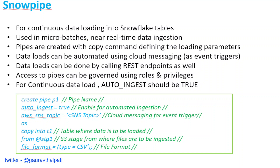The use case for Snowpipe is near real-time or micro-batch scenarios — any sensor data or continuously arriving file sources. To create a Snowpipe, you use the CREATE PIPE command. You set AUTO_INGEST = TRUE for automated ingestion, provide the SNS or SQS topic as the event trigger, and then write a normal COPY command specifying the external stage, the target table, and the file format. Once the pipe is created, you can load files into S3 and verify that they are being loaded automatically.